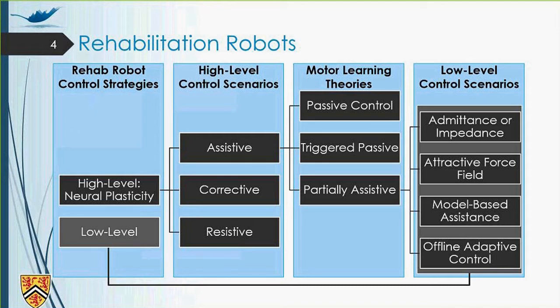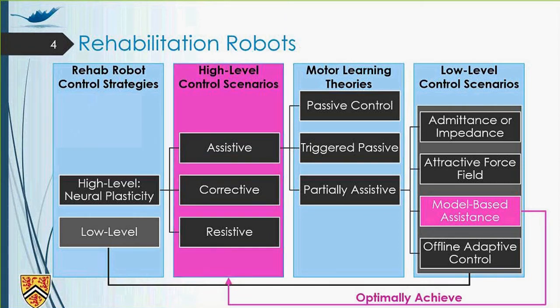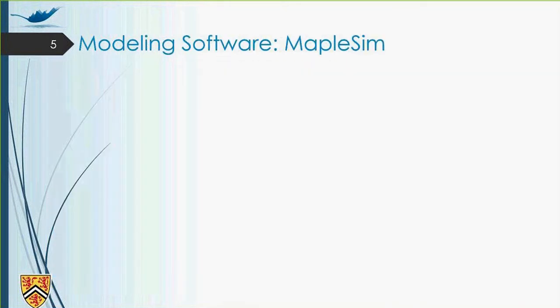Among these low-level control scenarios, there is not much research in model-based assistance. So our project lies on model-based assistance, and the goal is to optimally achieve high-level control scenarios with the model-based assistance of the rehabilitation robot. Now, with this introduction and objective and control scenario that I talked about, let's see what's the modeling software that we should use for our project.